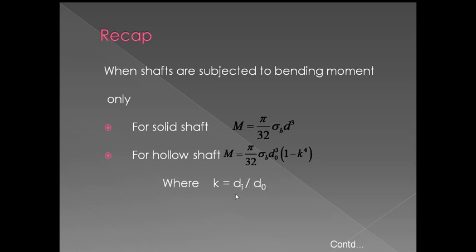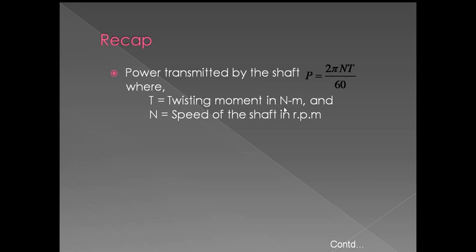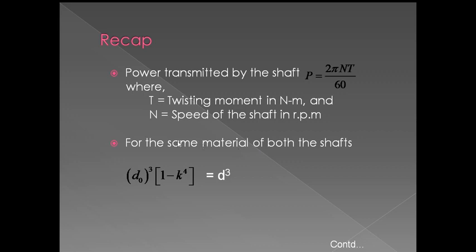Here d_O is the outer diameter and d_I is the inner diameter of the shaft, and k equals d_I by d_O. For power transmitted by the shaft: P equals 2 pi N T by 60. If power and speed are given, you can find the torque and substitute into the previous formula. Torque is in Newton meters and speed is in RPM. For the same material, to replace a solid shaft with a hollow shaft: d_O cubed into (1 minus k to the power 4) equals d cubed.